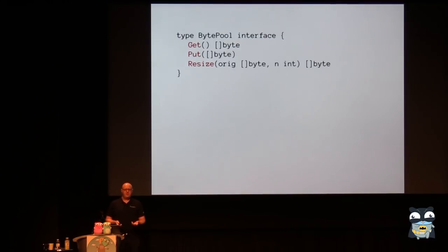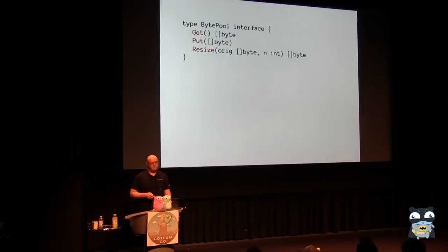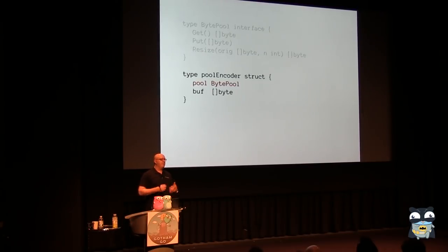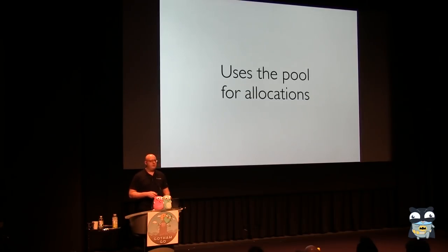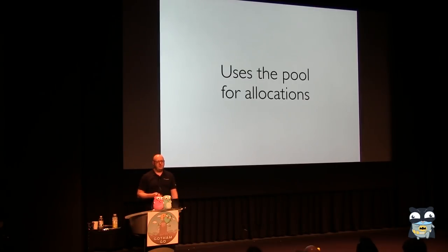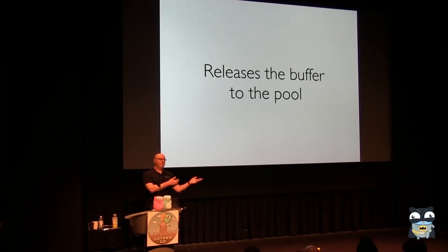To experiment with different memory management strategies, I want pluggable memory management using an interface. I have a BytePool interface with a Get and a Put — Get pulls something out of the pool, Put recycles it back in — and a Resize, which simulates what append does: takes some original thing, makes it bigger, copies stuff in, and moves on. The encoder is built around the pool, with a buffer that gets allocated from the pool or resized over time. It never calls append directly so we're not leaking, and when it's done it releases the buffer back to the pool.